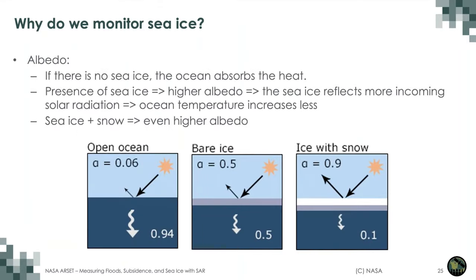Why do we monitor sea ice? One of the primary reasons is that it controls albedo in the Arctic Ocean. When there is no sea ice, solar energy is absorbed by the ocean. Sea ice reflects incoming solar radiation, increasing albedo and limiting ocean temperature rise. Adding snow on top of the sea ice raises the albedo even further, reflecting most solar radiation away from the ocean.